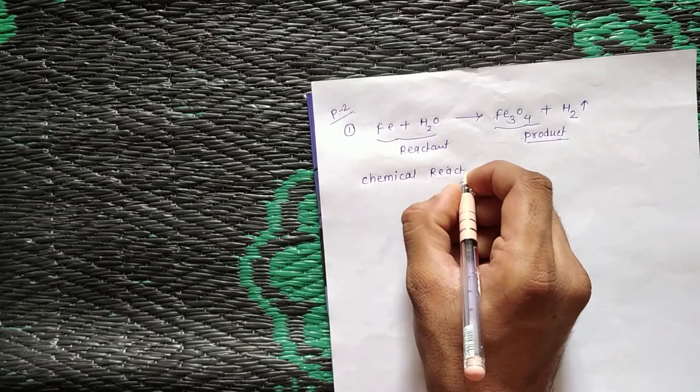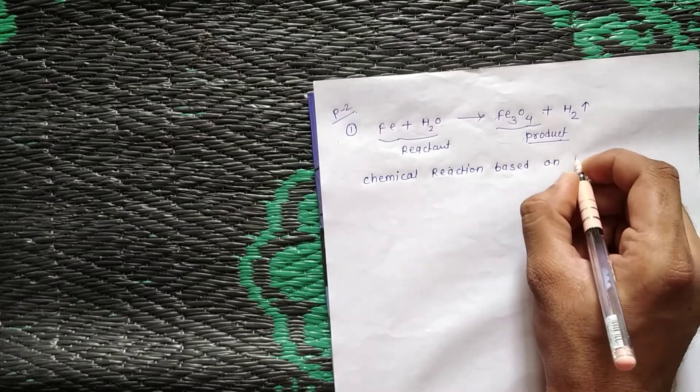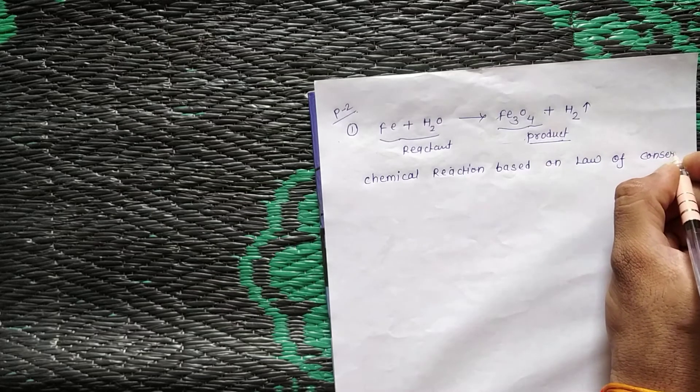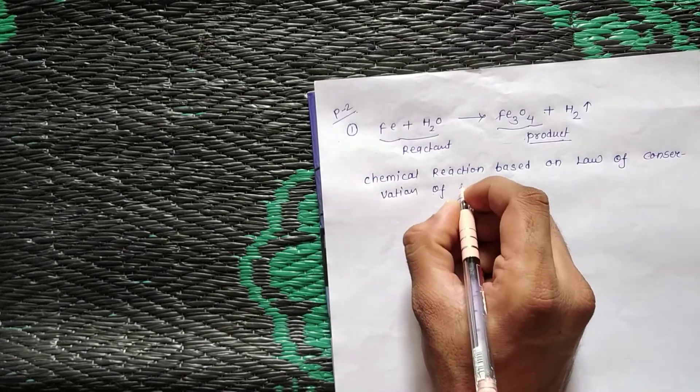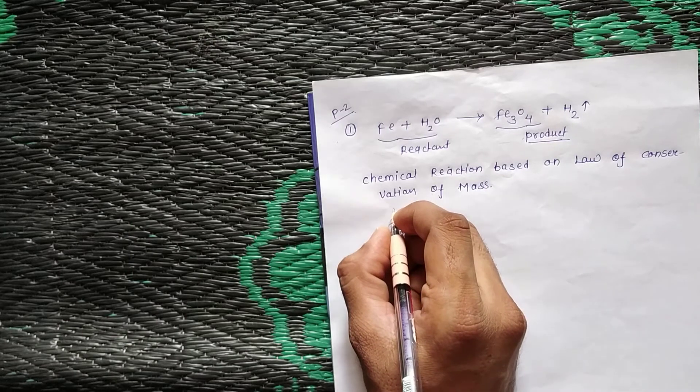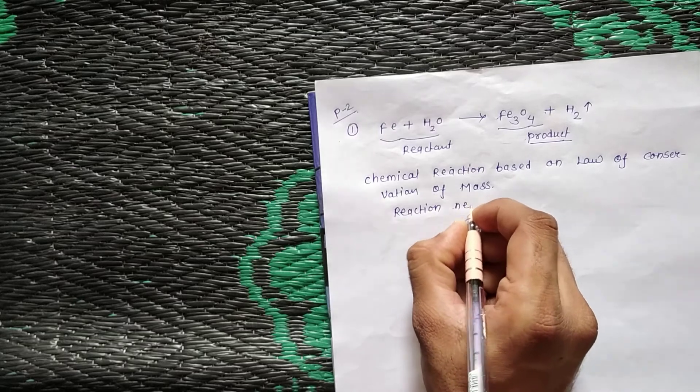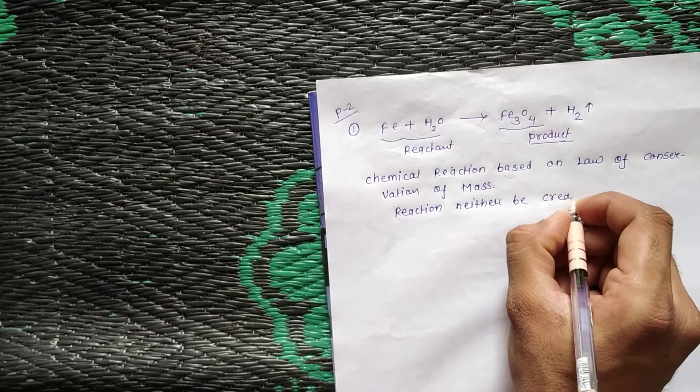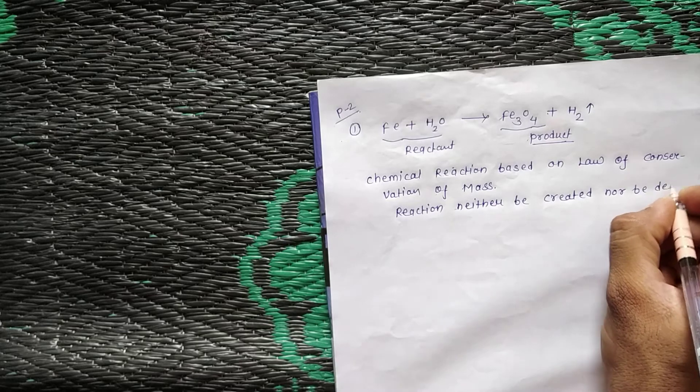Chemical reactions are based on law of conservation of mass. According to this rule, in a reaction matter can neither be created nor be destroyed.